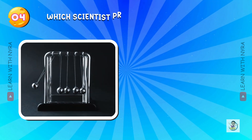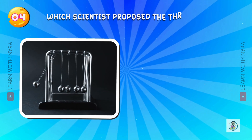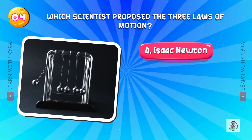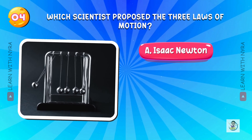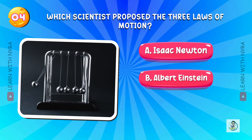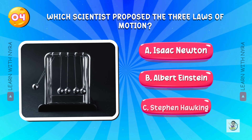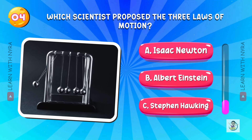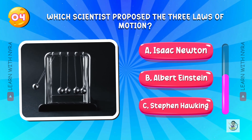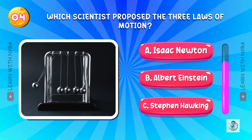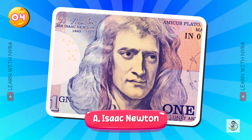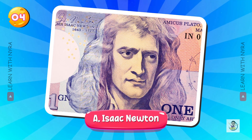Which scientist proposed the three laws of motion? A. Isaac Newton, B. Albert Einstein, C. Stephen Hawking. And the answer is A. Isaac Newton.